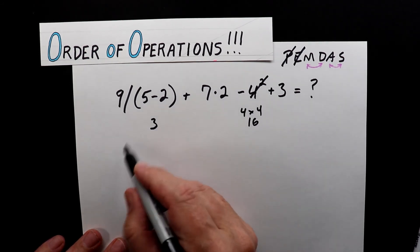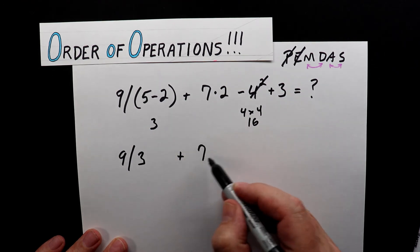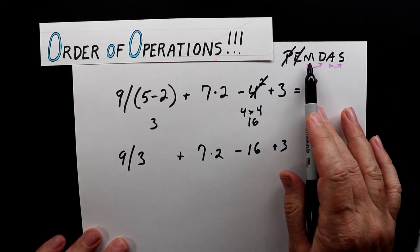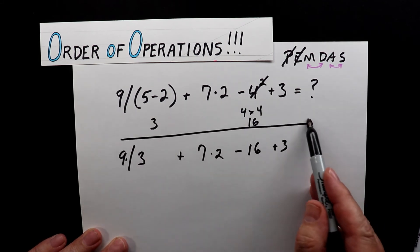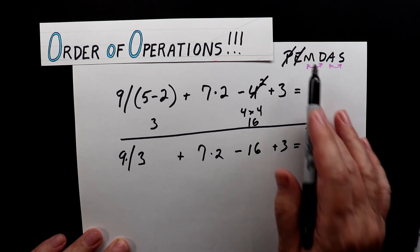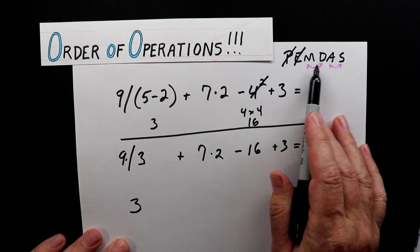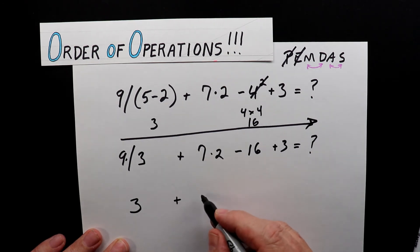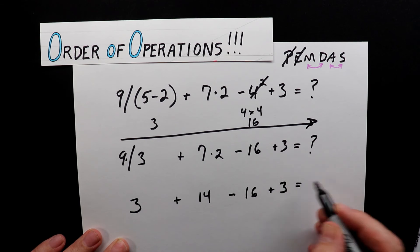I'll rewrite the expression more neatly. Now we have: nine divided by three, plus seven times two, minus 16, plus three. Going left to right, I look for multiplication and division. I start with the division on the left: nine divided by three is three. Then I find multiplication: seven times two is 14. So now we have: three plus 14 minus 16 plus three equals mystery.